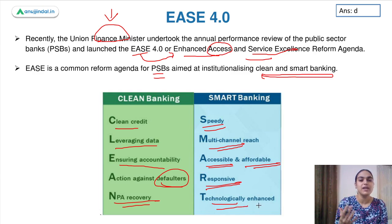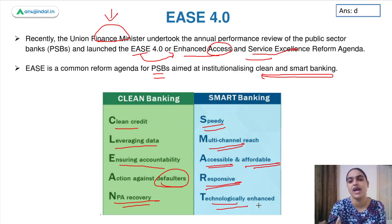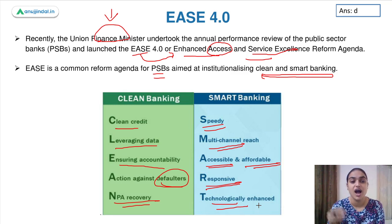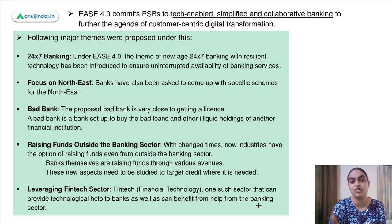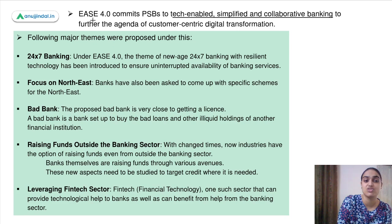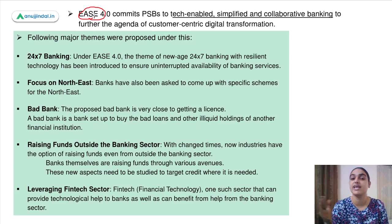Public sector banks have an agenda to improve the banking sector, and for this they come up with different objectives to ensure clean and smart banking. These objectives are categorized under the EASE reforms. EASE 1, EASE 2, EASE 3 — there have been different objectives. Now let's see what EASE 4.0 is focused on — what are the themes and initiatives to ensure our banking sector is strong and efficient.